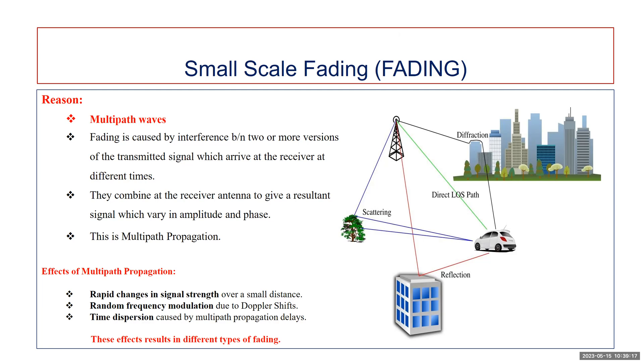If objects in the radio channel are static and motion is considered only due to the mobile, then fading is purely a spatial phenomena. The receiver moving at high speed can pass through several phases in a short period of time. At that time, rapid changes in signal strength will occur.